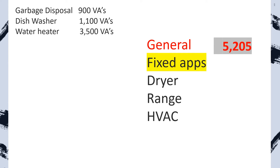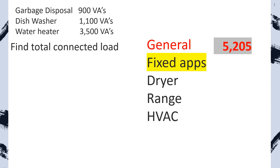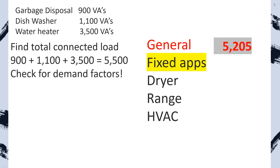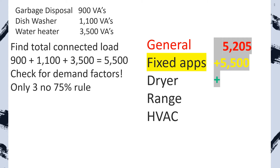Now let's do our fixed appliances. We have a garbage disposal, dishwasher, and water heater. Find the total connected load — we total them all up and it equals 5,500. Now we check for demand factors. There are only three appliances, so the 4-or-more 75% rule does not apply, and we write down 5,500.